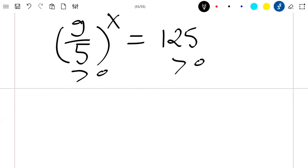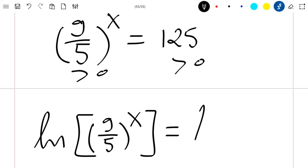Our log function will then be well defined on this equation. So we will have here that ln of 9 divided by 5 to the power x equal to the ln of 125.